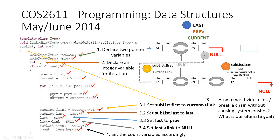Then we say for i equals two, because we want to break at position two. If i is less than or equal to pos, and pos needs to reach two, it won't execute the for loop anymore. i++ is the increment. Inside the loop: we set previous to previous.link, which moves previous from its current node to the next node. Then current equals current.link, so current also moves to the next node.